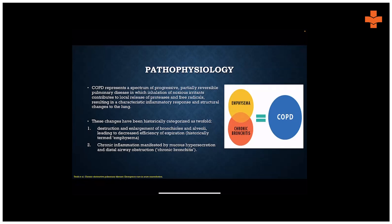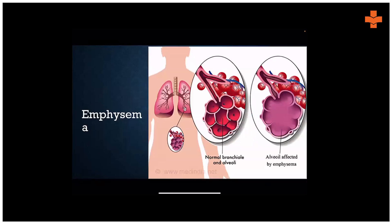Most of these structural changes are irreversible in the long run. They have been historically categorized as twofold: destruction and enlargement of the bronchioles and alveoli, leading to decreased efficiency of expiration — these patients are called the emphysematous type. And then there is inflammation which manifests by mucus hypersecretion and distal airway obstruction, which is the bronchitis type. So emphysema and bronchitis together are actually COPD. A lot of them will have overlapping symptoms, however the management does not change drastically.